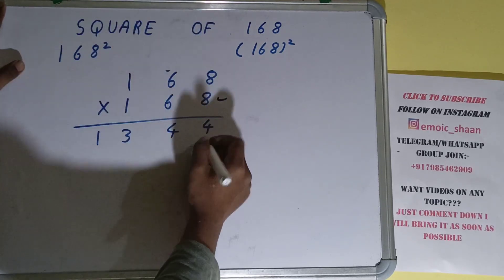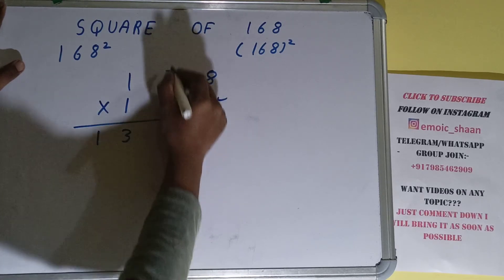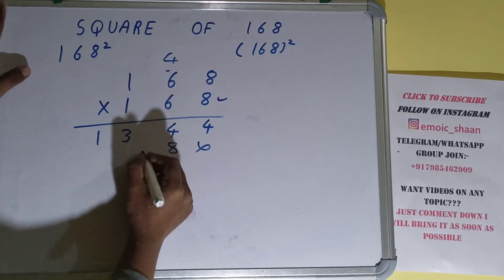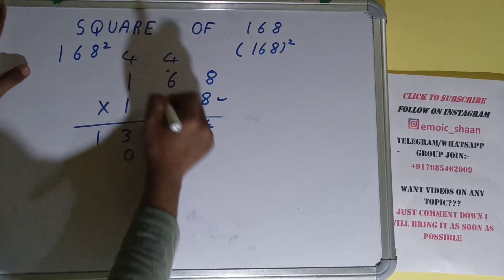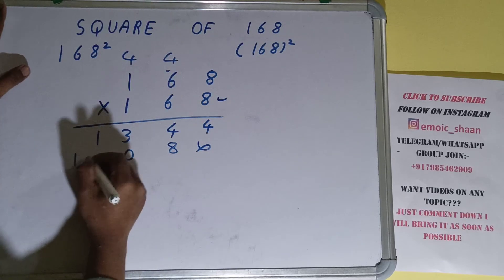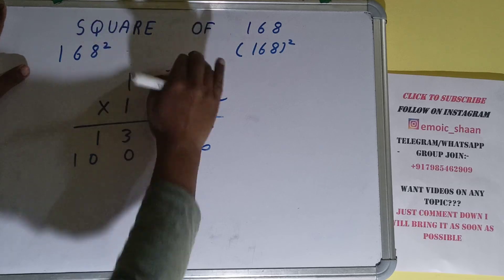Okay, we are done with this. Now, 6 times 8 is 48. 8 down, 4 carry. 6 times 6 is 36 plus 4 equals 40. 0 down, 4 carry. 1 times 6 is 6 plus 4 equals 10. Now the last one.